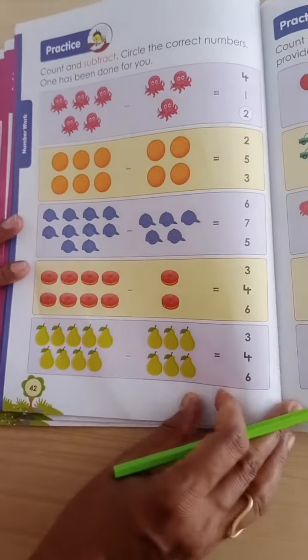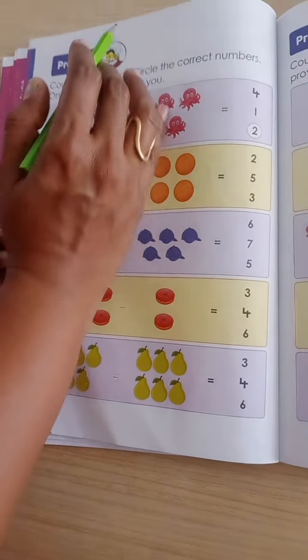Children, take out your book 8. In that, take out page number 42. Put today's date.